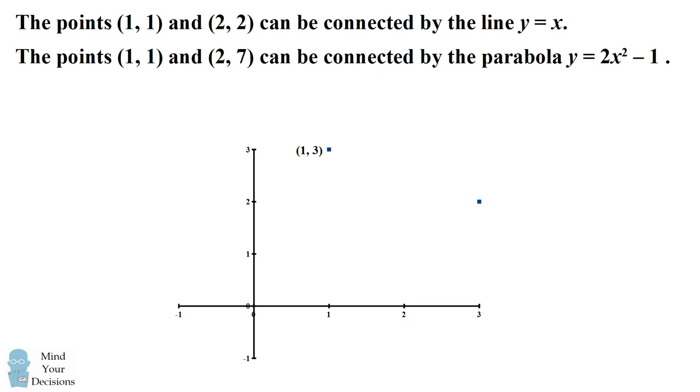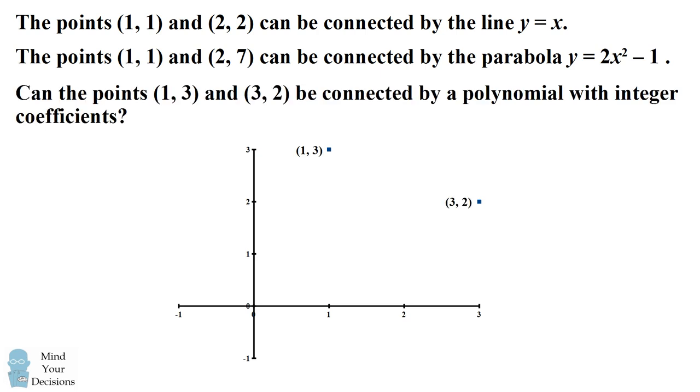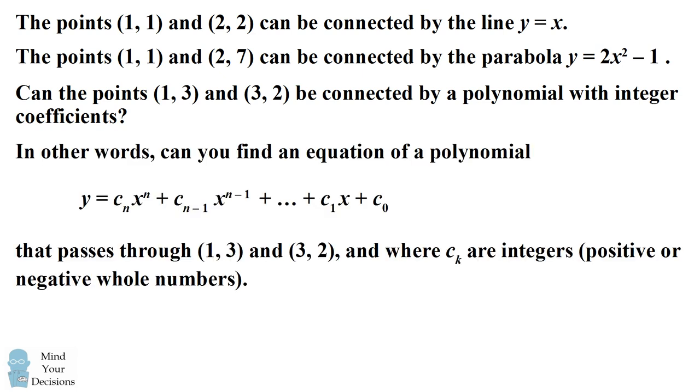Now consider the points (1, 3) and (3, 2). Can you connect these points by a polynomial that has integer coefficients? That is, can you find an equation of the following form that passes through the two points, where all of the coefficients are integers, meaning they are positive or negative whole numbers?